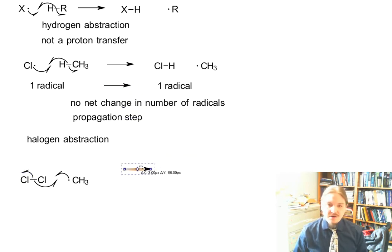So we draw our fishhook radical arrows, one from the single electron on the methyl radical over to a chlorine. And then one from the chlorine-chlorine bond, one electron would go with one chlorine. The other electron would go to form the new carbon-chlorine bond.